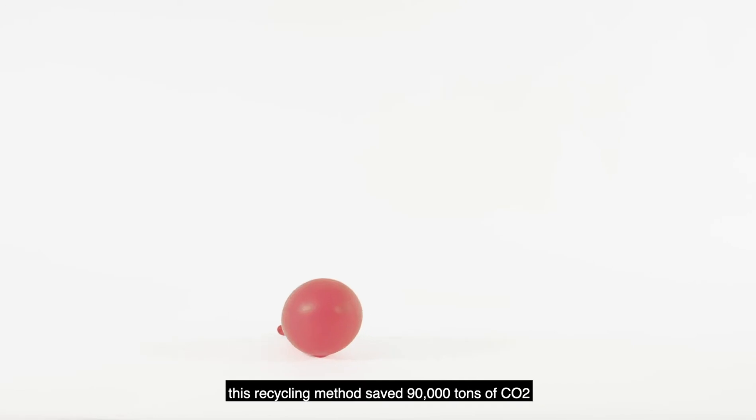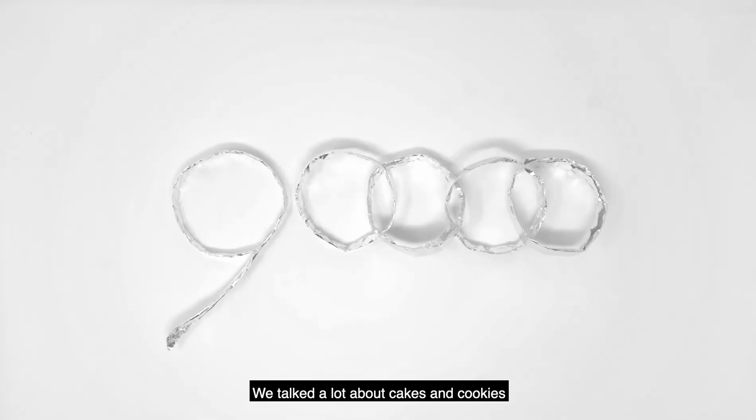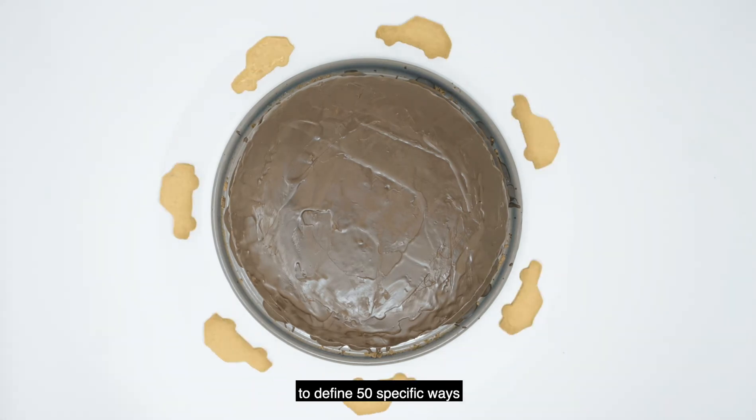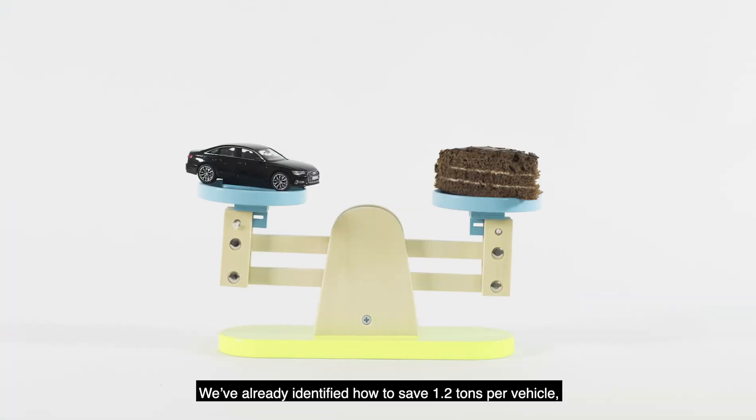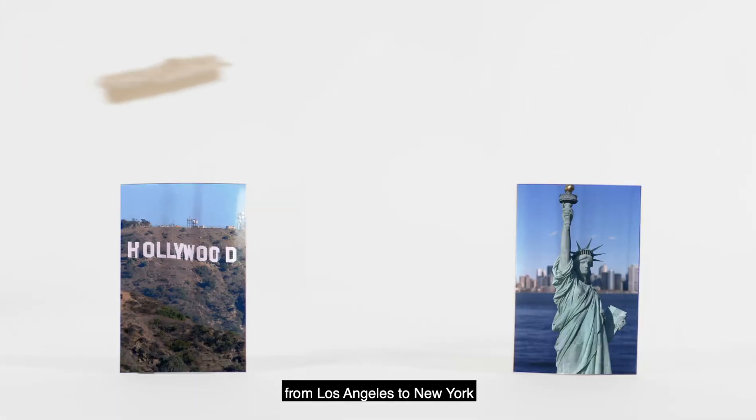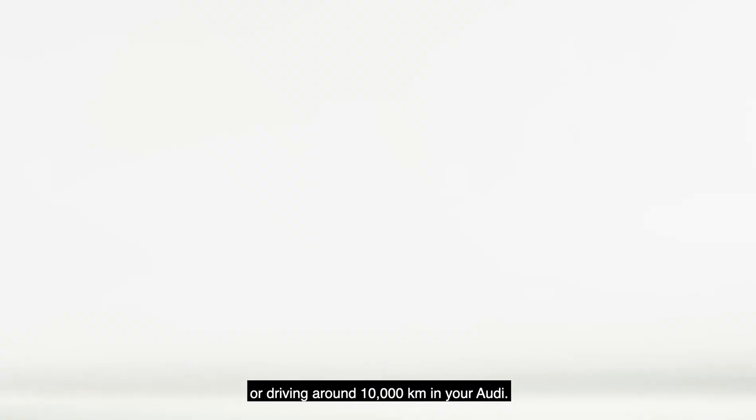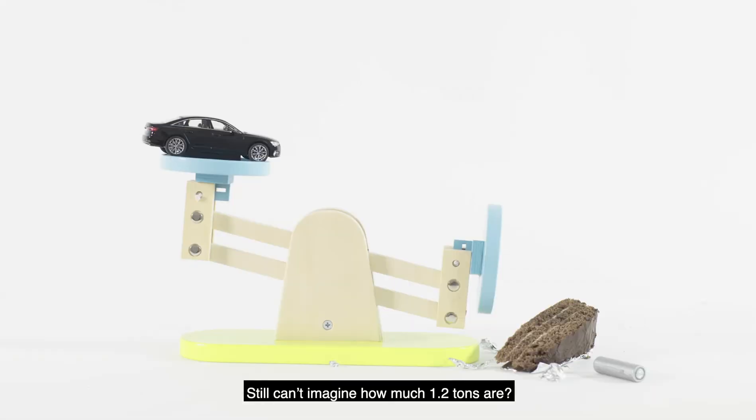On the balance sheet, this recycling method saved 90,000 tons of CO2 in 2018. We talked a lot about cakes and cookies to define 50 specific ways of reducing carbon. We've already identified how to save 1.2 tons per vehicle, which equals your next flight from Los Angeles to New York, or driving around 10,000 kilometers in your Audi. Still can't imagine how much 1.2 tons are?